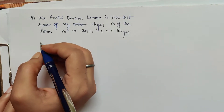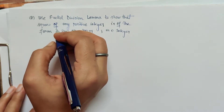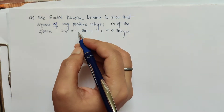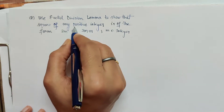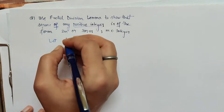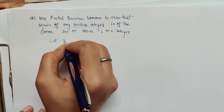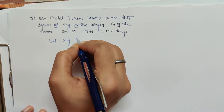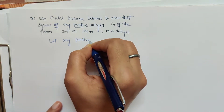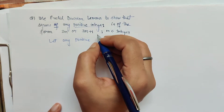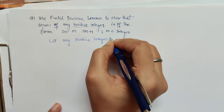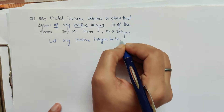As it is given — any positive integer — we first have to consider that positive integer. So let us suppose any positive integer be a.